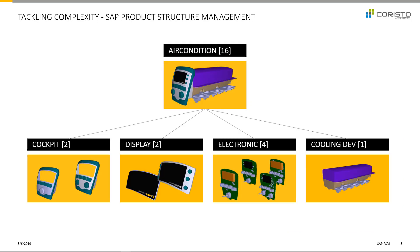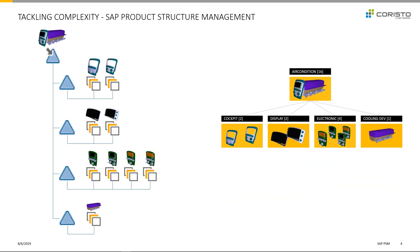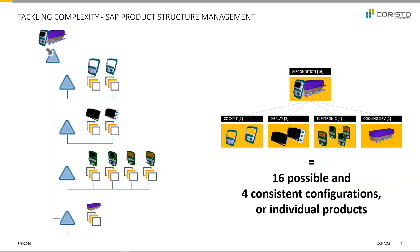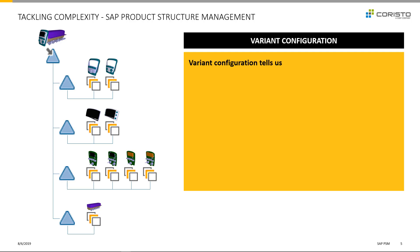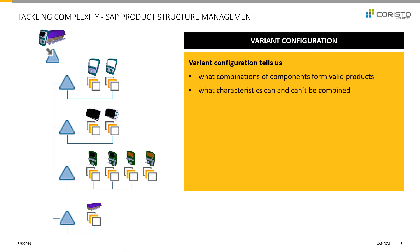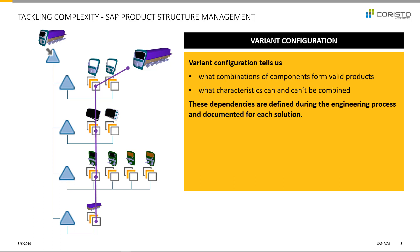To accomplish that, we have our small example that some of you may recognize from our first video on SAP Product Structure Management — the little car air conditioning device, which served as our example in the previous video as well. You might remember here you see a product structure of 16 possible and 4 valid product variants. Variant configuration tells us what combinations of components form valid products and what characteristics can be combined and which can't. These dependencies are defined within the engineering process and documented for each technical solution.